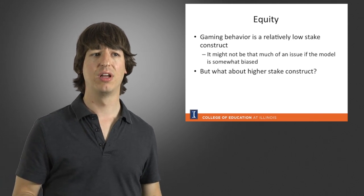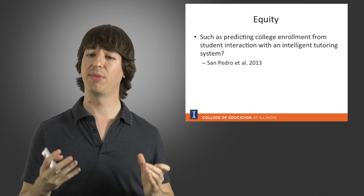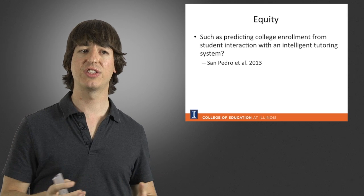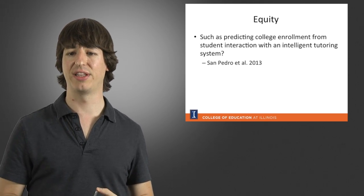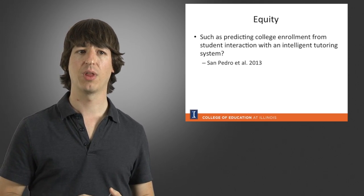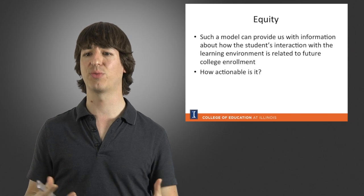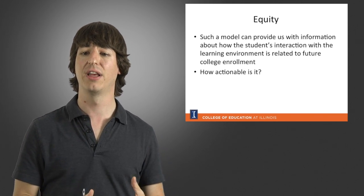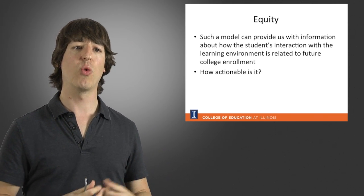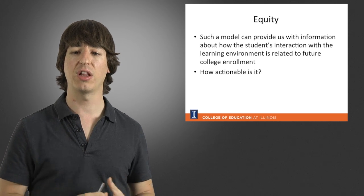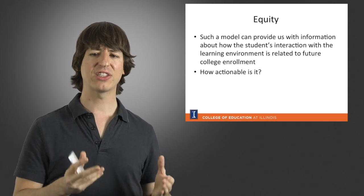For example, if we consider a model that's going to be predicting college enrollment from student interaction within an intelligent tutoring system. So this model can provide us with some really useful information that allow us to study what leads student to enroll in college or not. But how actionable is it?